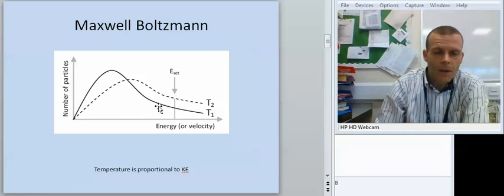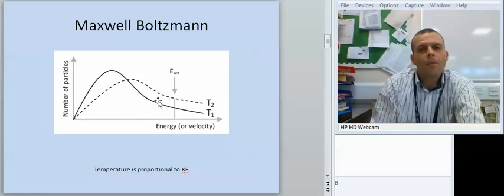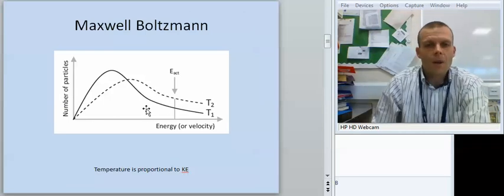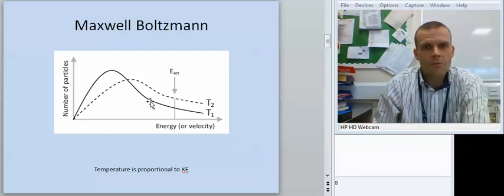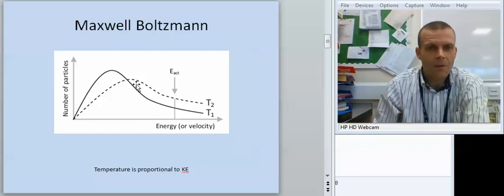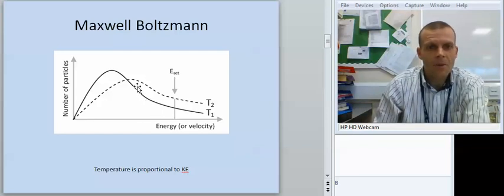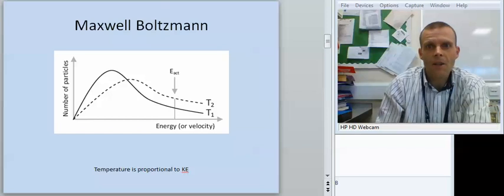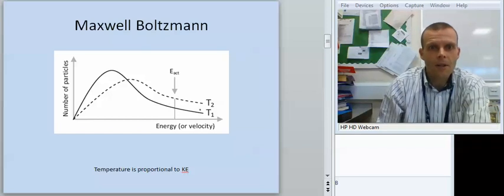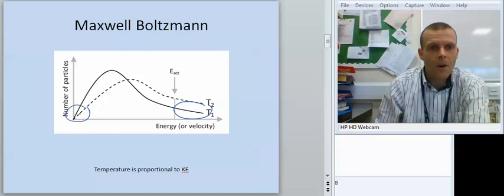So we'll just start by looking at the particles that we'd maybe find in a sample of anything really - a sample of gas, a sample of a liquid, some solid. Some of them will be at very high energy, and some of them will have a relatively low energy. So this is kind of a high energy end. This is the few that have a very low energy. Most are kind of somewhere in between.